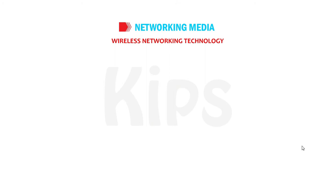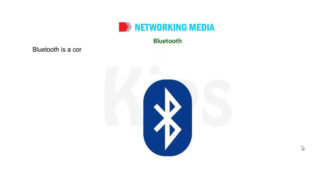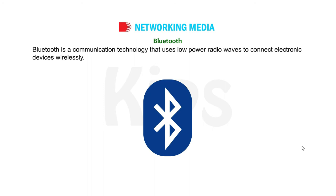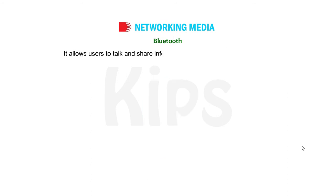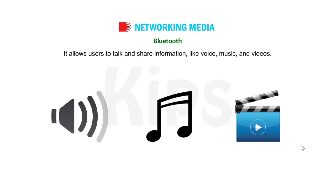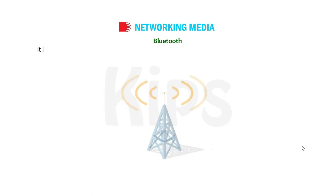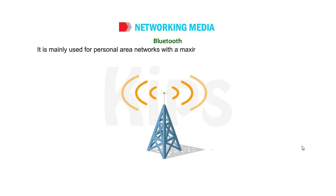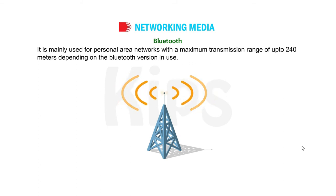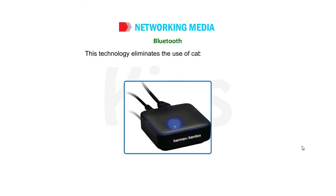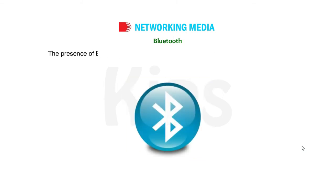Wireless Networking Technology. Bluetooth is a communication technology that uses low-power radio waves to connect electronic devices wirelessly. It allows users to talk and share information like voice, music and videos. It establishes short-range communication between phones, computers and other network devices. It is mainly used for personal area networks with a maximum transmission range of up to 240 meters, depending on the Bluetooth version in use. This technology eliminates the use of cables and adapters. The presence of the Bluetooth icon indicates that the device is enabled with Bluetooth.